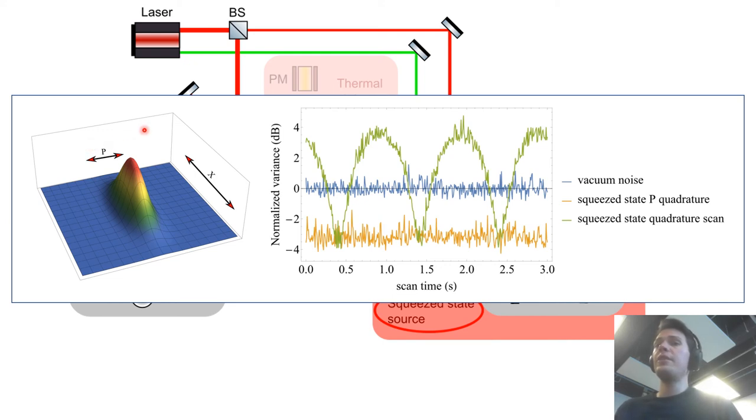Indeed when you measure some variance below the shot noise on the check quadrature P well that's a sign that the state has some purity and it's a sign that the excess noise on the other quadrature the data quadrature X cannot be accessed by a malicious party. So the more squeezing you measure on one quadrature the more secure randomness is available on the anti-squeezed quadrature.